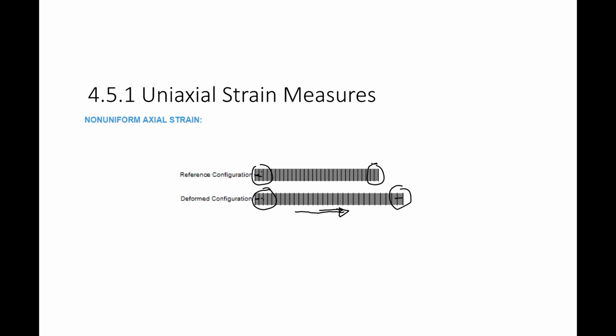Rather than saying the total length minus the total length, which is a global strain measure, I need a local strain measure. And so in this case, the question is, what is the stretch ratio? How can I calculate lambda in this case?